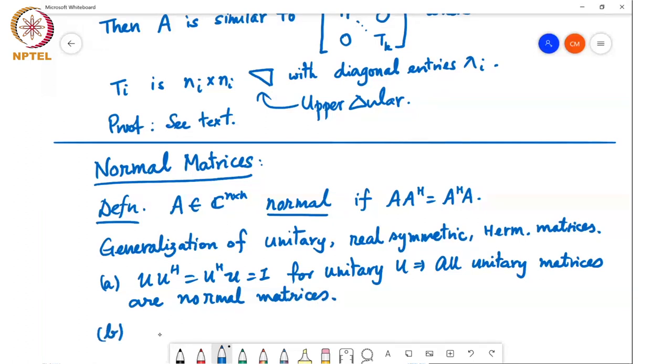Similarly, AA^H = A^H A if A = A^H, so all Hermitian matrices are normal.